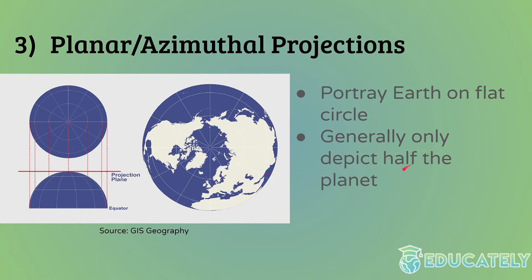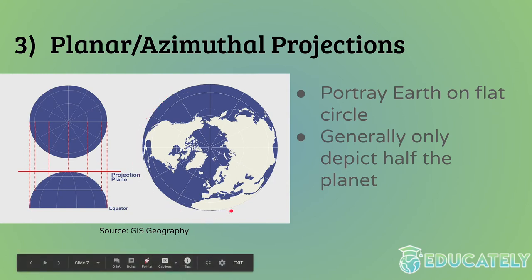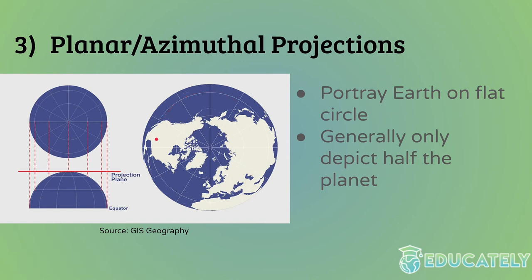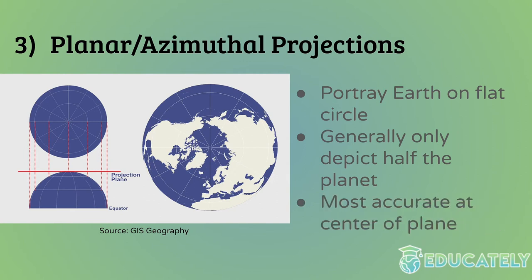Generally, azimuthal projections only depict half the planet, just from the way planes work. You can make projections that depict more than half, but it gets extremely distorted — the latitude lines make perfect circles but get more and more spread out as you go away from the center. Azimuthal projections usually won't depict more than three quarters of the planet, and they're usually centered at the poles.